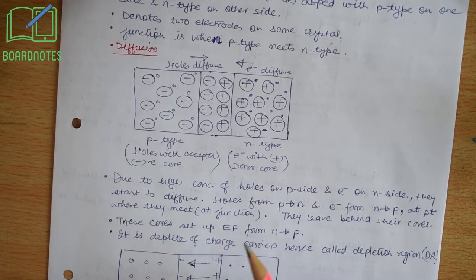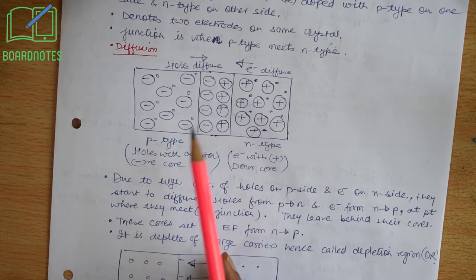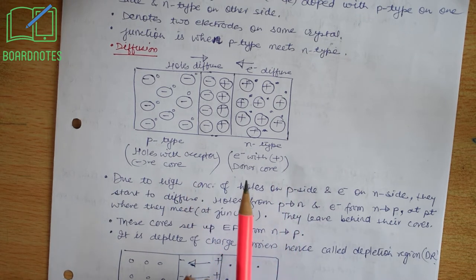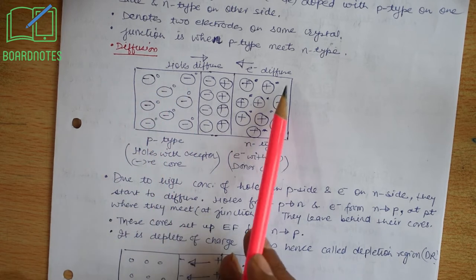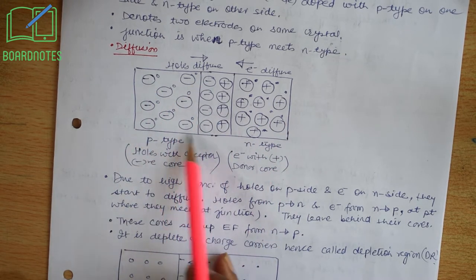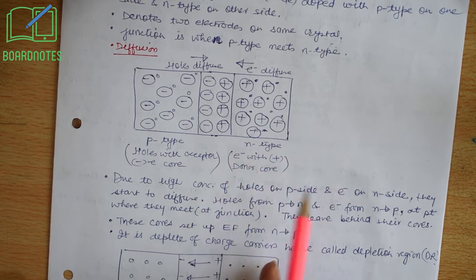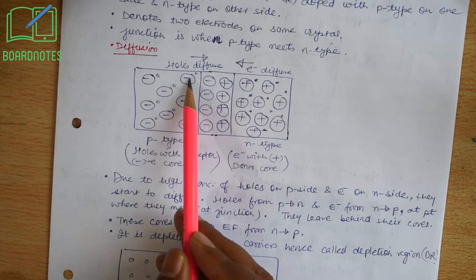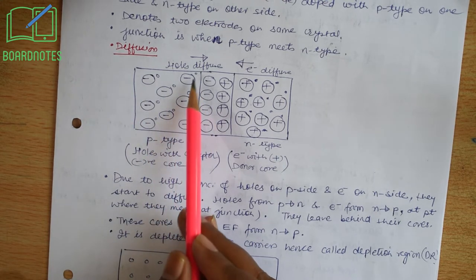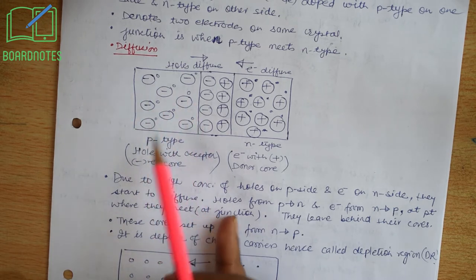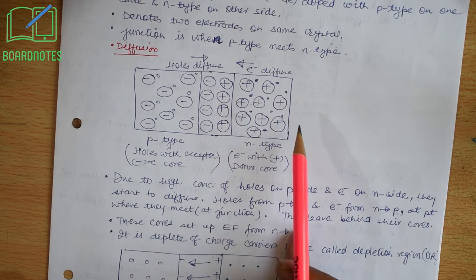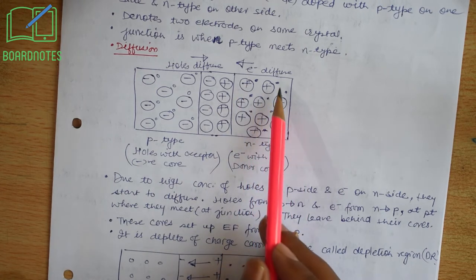Let us describe two processes that occur inside a p-n junction. First is diffusion, the other is drift. Let us talk about diffusion. Let this be a p-n junction — this side is p-type doped and this side is n-type doped. These are acceptor negative cores with their associated holes on the p-side, whereas on the n-side, these are donor cores with associated electrons.